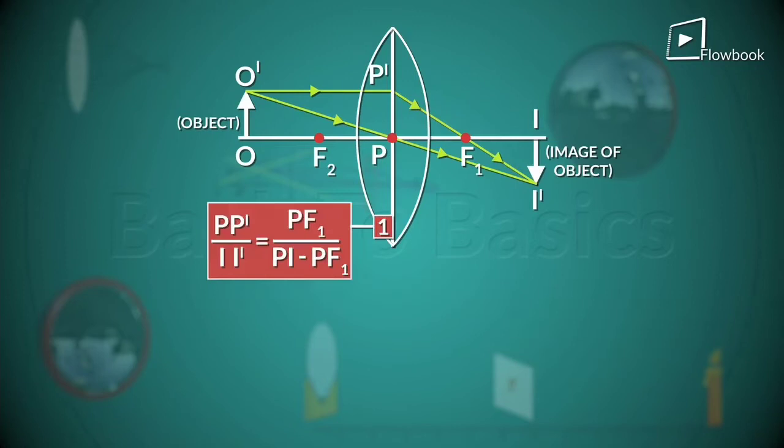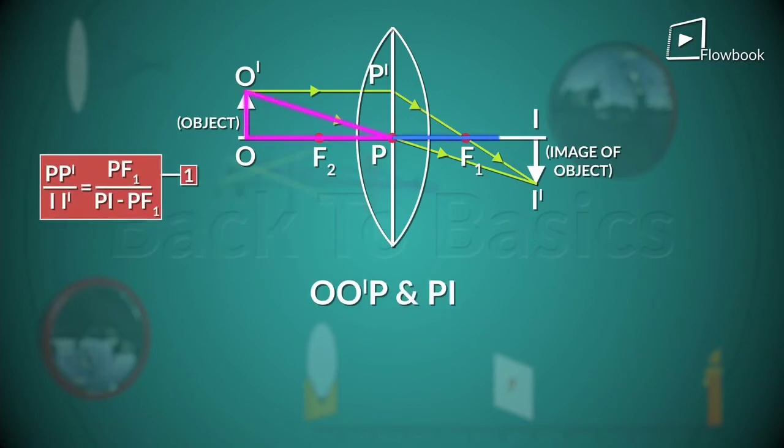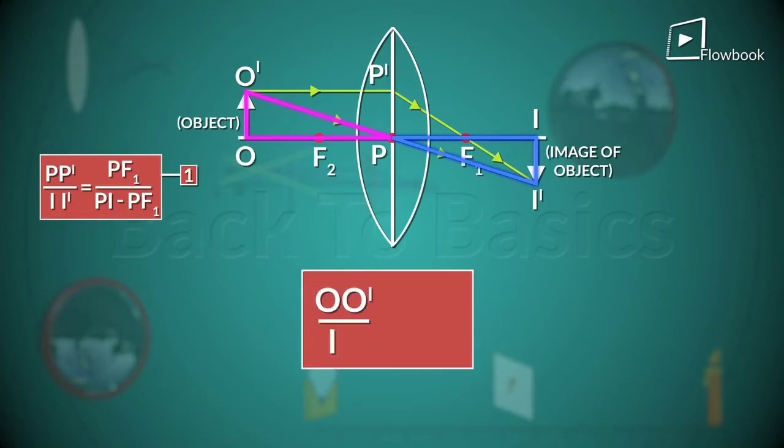Now, even O O'P and P I I' are similar. Therefore, O O' by I'I' is equal to PO by PI.